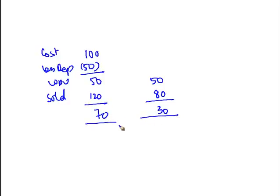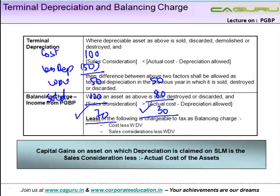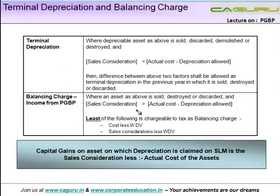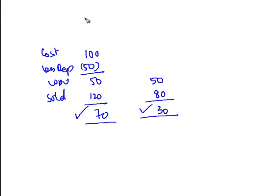Let me take a bigger example. My cost was 100, depreciation was 50, so written down value was 50. Now I had two cases — a gain of 70 and a gain of 30. In the case of a gain of 70: cost less WDV was 50, while my gain was 70, so I will claim 50 as balancing charge. In the case of a gain of 30: since the gain of 30 is less than the depreciation of 50, the entire 30 is chargeable as balancing charge.